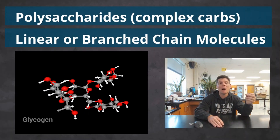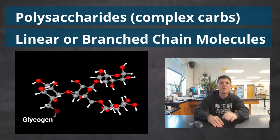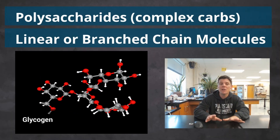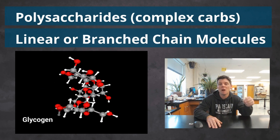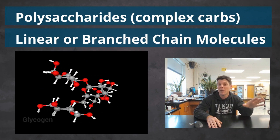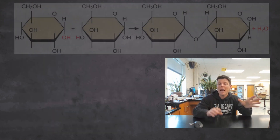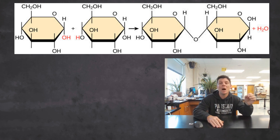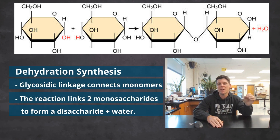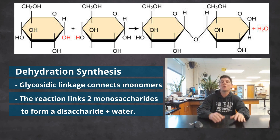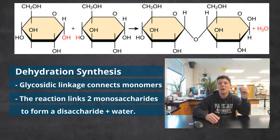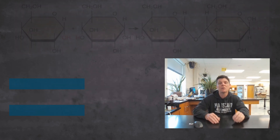Complex carbohydrates are polysaccharides that are made when monosaccharides are connected to form large linear or branched molecules. The reactions that build complex carbohydrates are referred to as dehydration synthesis, due to the water molecules that are formed as a byproduct of the reaction that creates the covalent bond between the two monosaccharides.